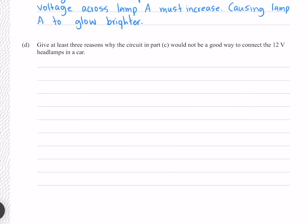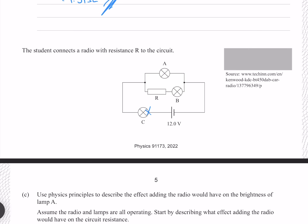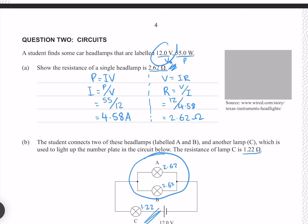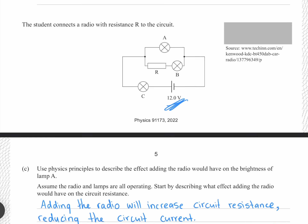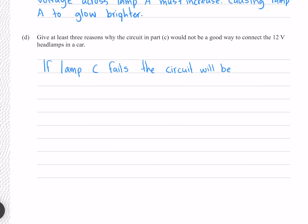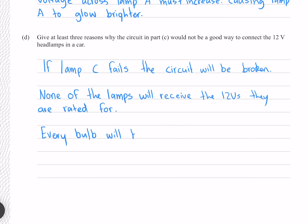Give at least three reasons why this circuit would not be a good way to connect 12-volt headlamps in a car. First, if lamp C fails the whole circuit breaks. Second, none of the lamps receive the full 12 volts they are rated for. Third, every bulb has a different voltage and therefore a different brightness.